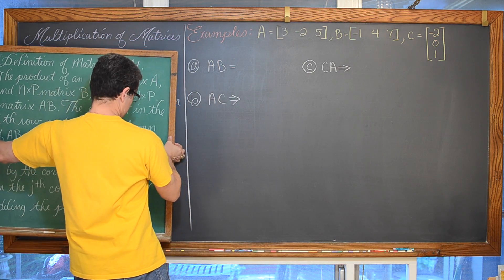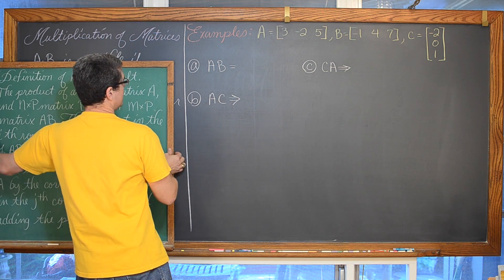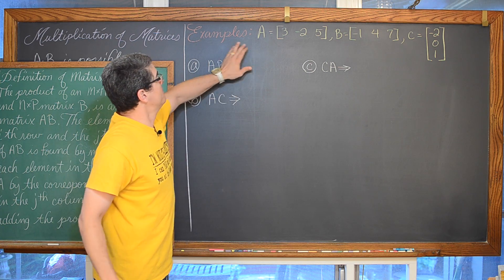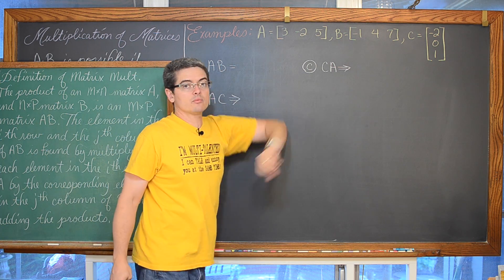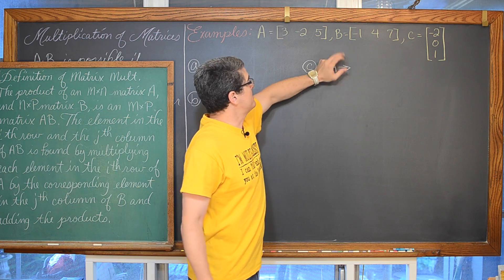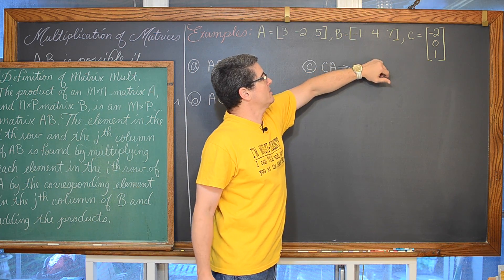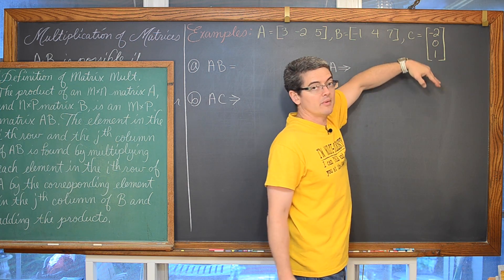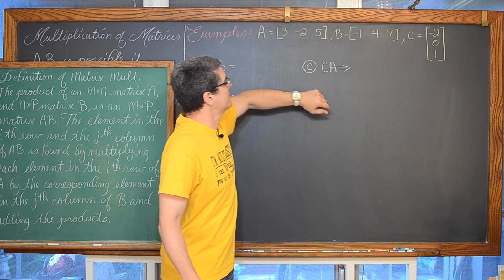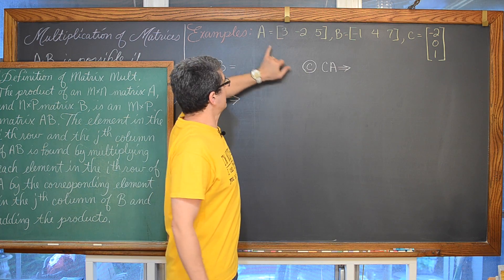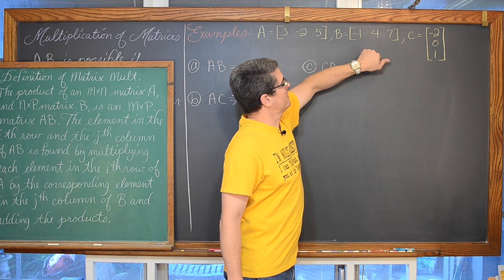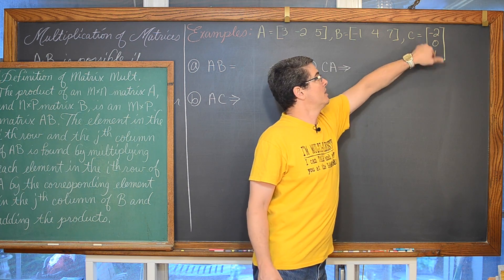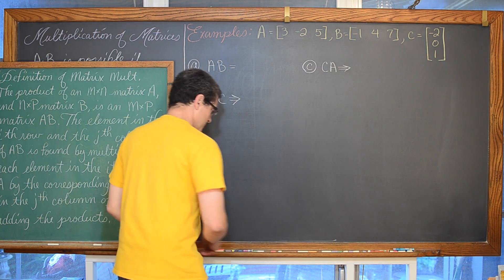Here are our first three examples. Matrix A is a 1 by 3 matrix: 3, negative 2, 5. Matrix B is also a 1 by 3 matrix: negative 1, 4, 7. And then finally C is a 3 by 1 matrix. So we have a 1 by 3, a 1 by 3, and a 3 by 1.